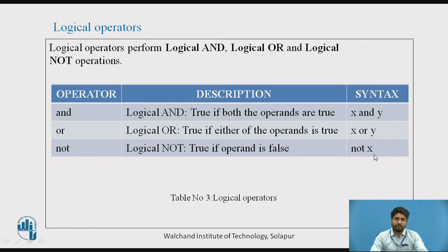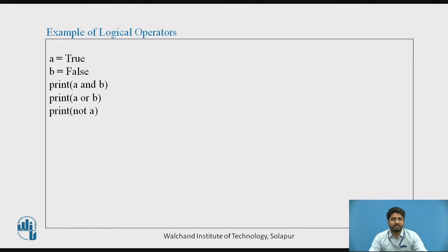We will understand with a simple example: a is equal to true and b equal to false. Print a and b, print a or b, and not a. Here, a and b, the result is false. a or b, any of this should be true, that is true. And not a: a is already true, it shows the opposite, that is false.